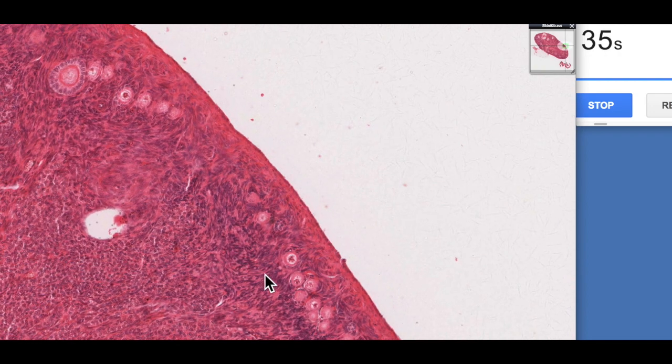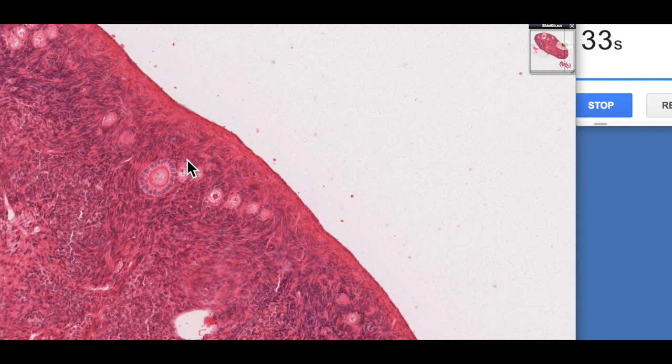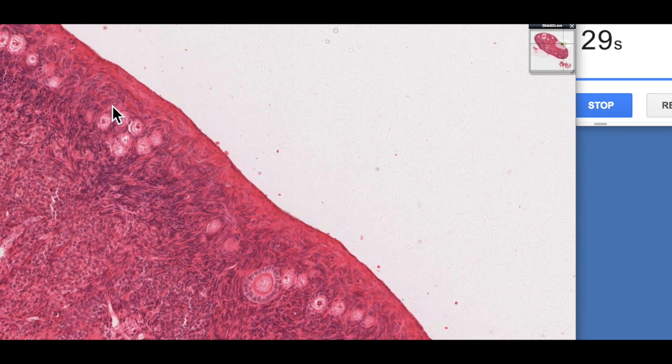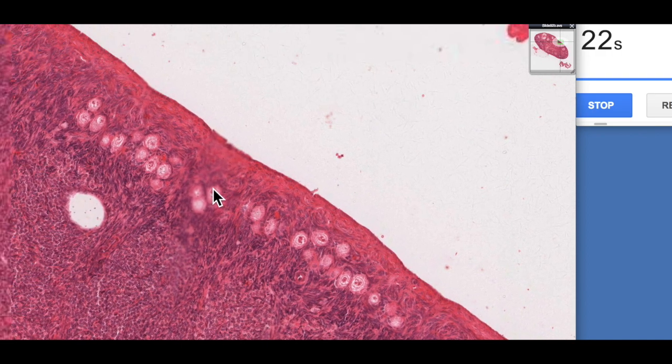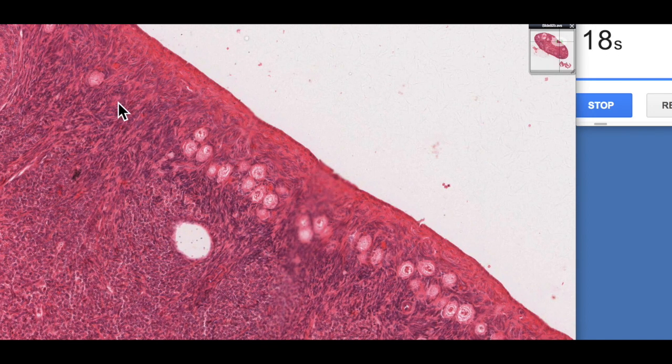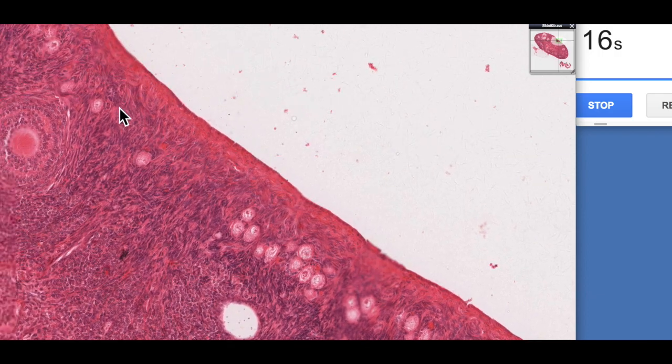If we zoom out a little bit, we can see these follicles at various stages of development, and then the tissue in between the follicles is referred to as stroma. So the cortex contains follicles at various stages of development, and then stromal cells in between, and there's capillaries and other blood vessels supplying these follicles here.